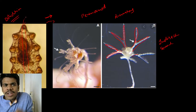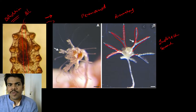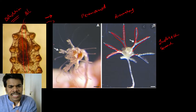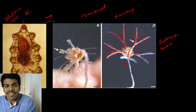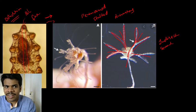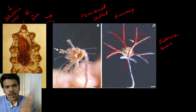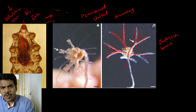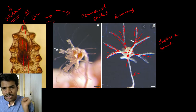It is Doliolaria larva. In the stage of Doliolaria larva it is bilaterally symmetrical. When it undergoes development, it is developed into pentacrinoid — one, two, three, four, five — pentacrinoid, which is stalked. The Doliolaria larva is the bilaterally symmetrical free larva, and it develops into pentacrinoid larvae which have five arms and a stalk.